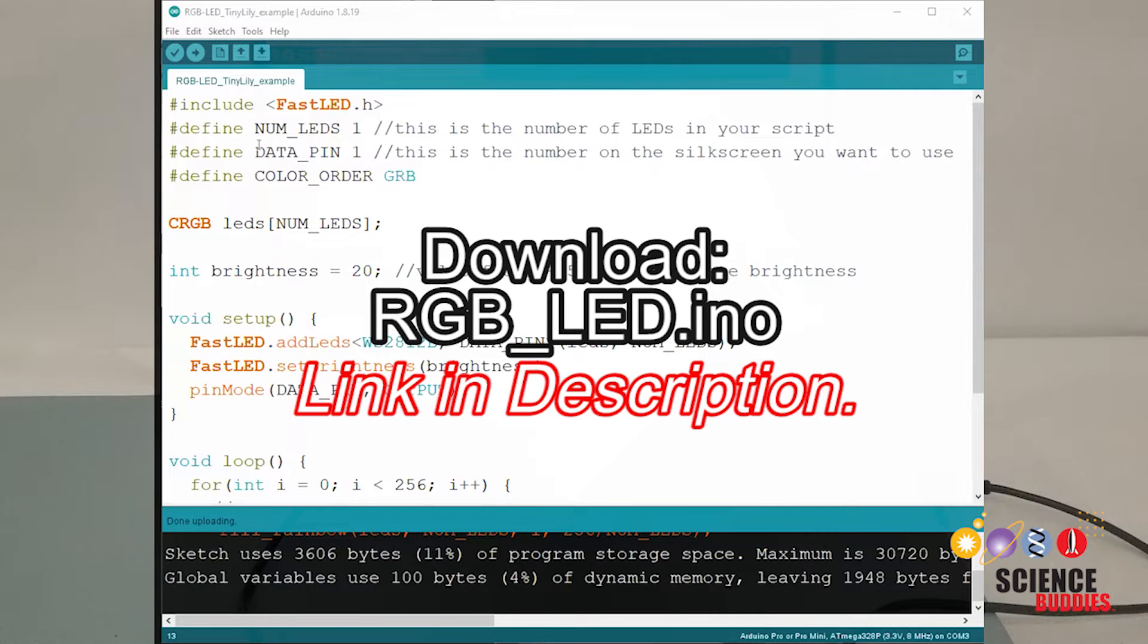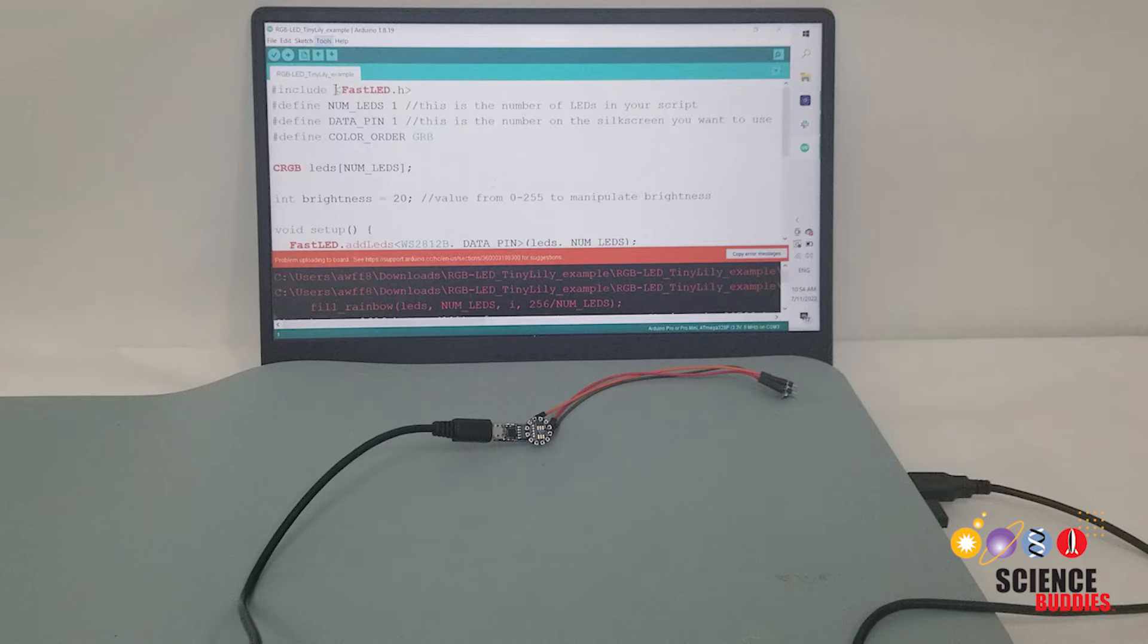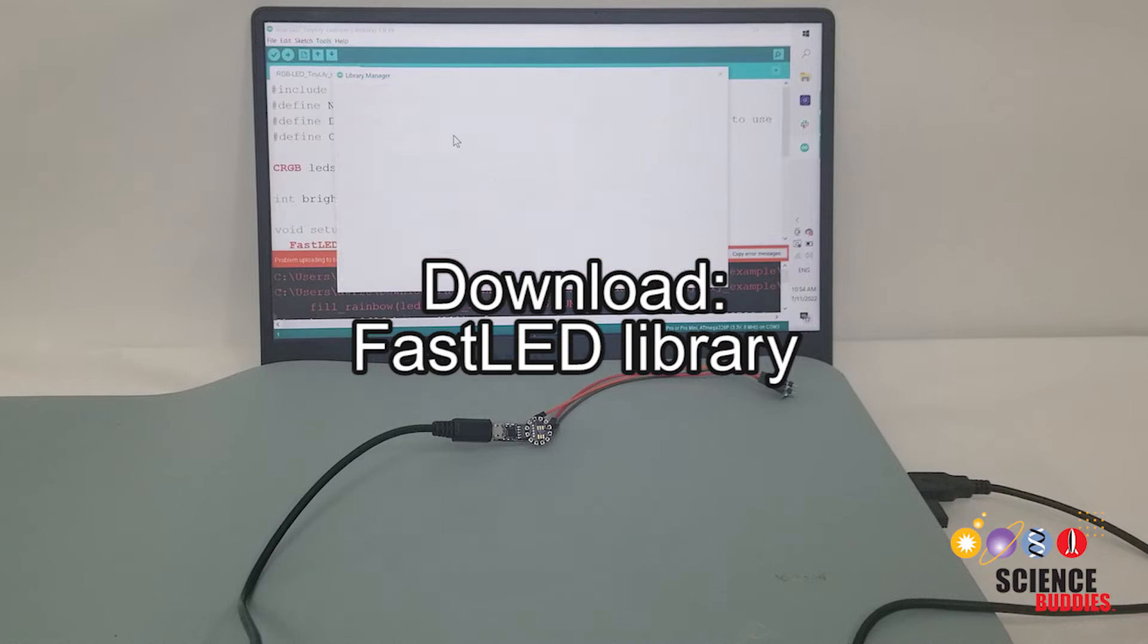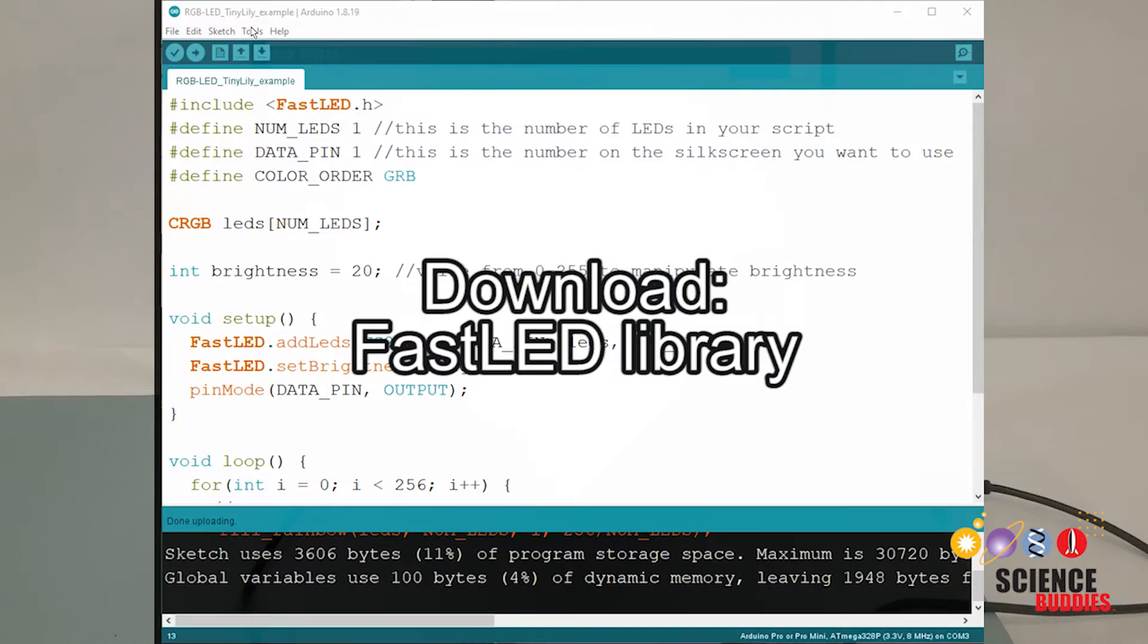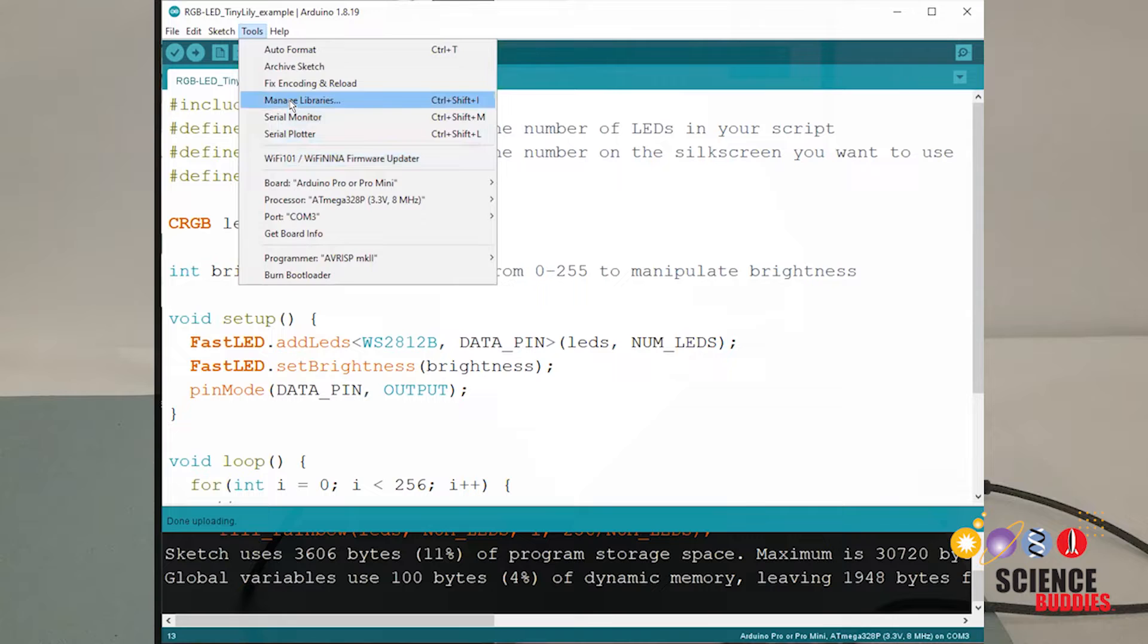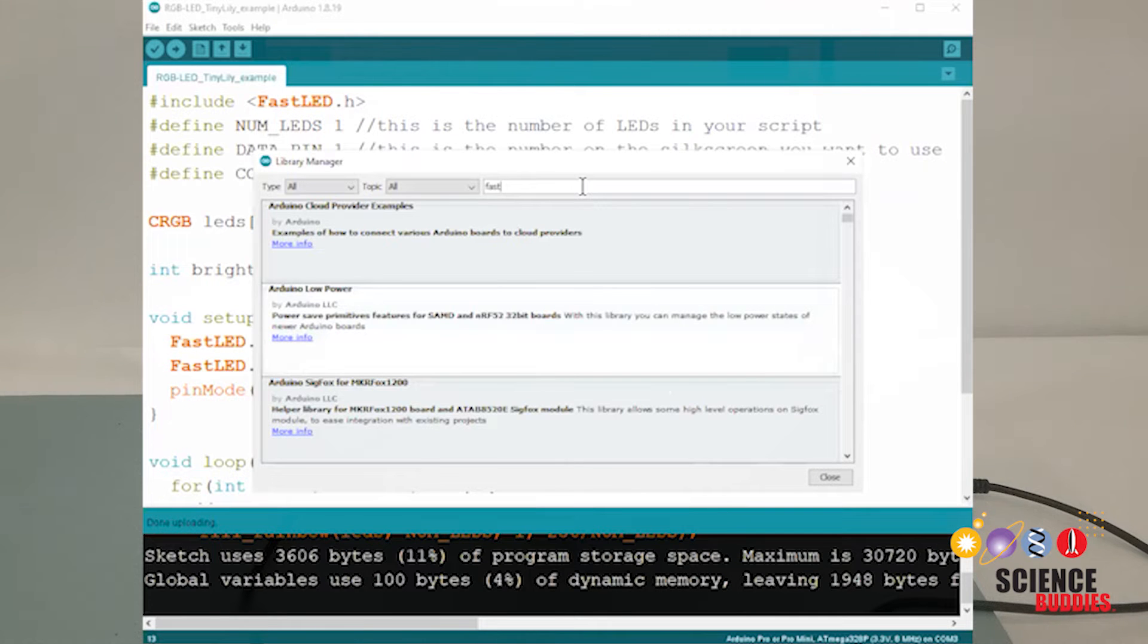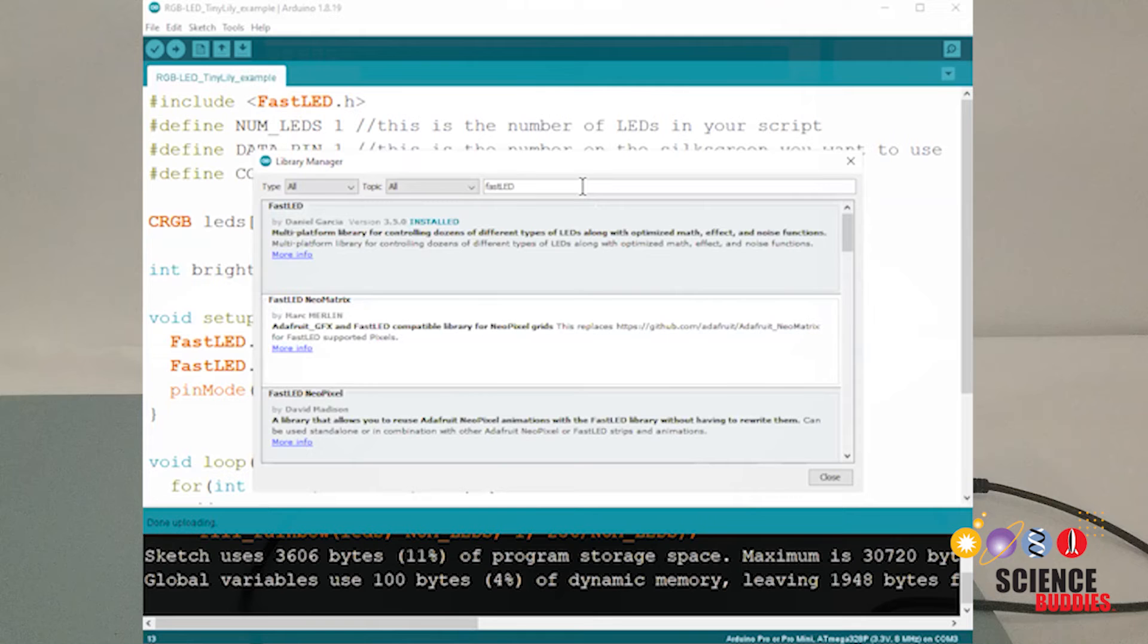Download RGBLED.ino and open it in the Arduino IDE. You should also download and install the FastLED library. To do so, navigate to the top bar and click Tools, Manage Libraries, and from here, search for FastLED. The first option should be what you should install.